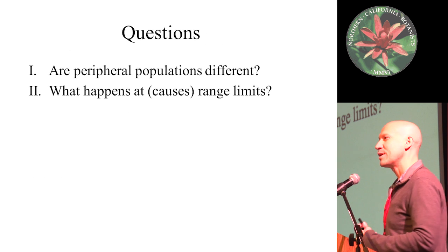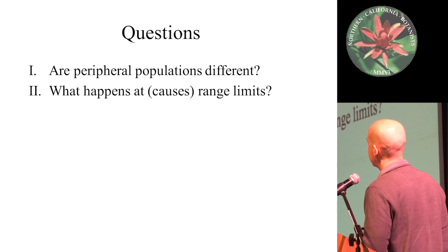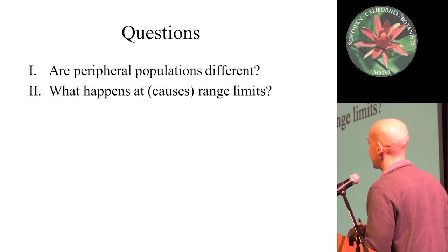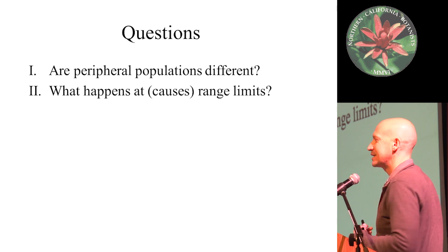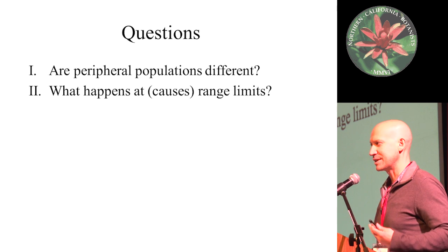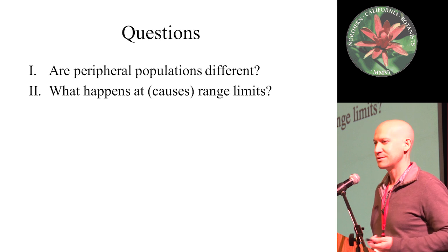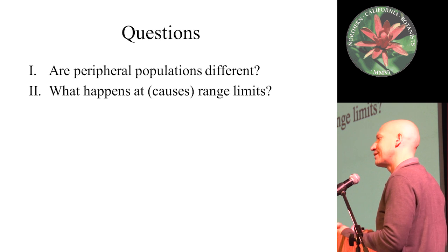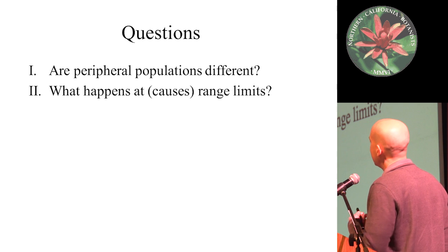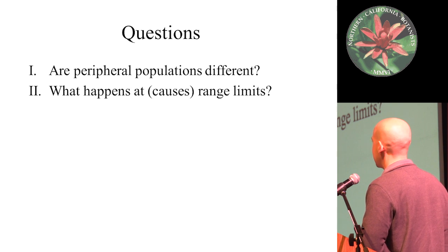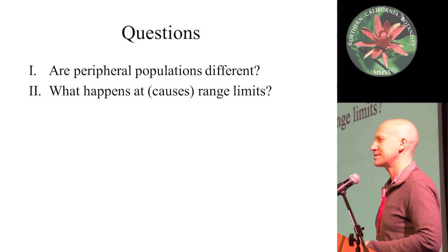There's a lot of research to be done on this, and it definitely drove a lot of my interest. Some of the questions I'd like to address today, and that I address in my research, are: one, are peripheral populations really different from central populations, and different how? And second, what happens at range limits, or what causes them?